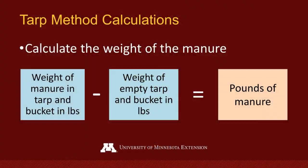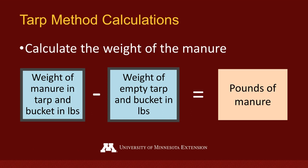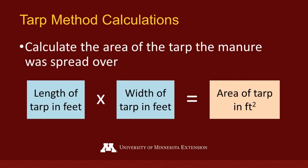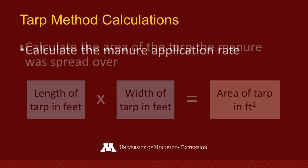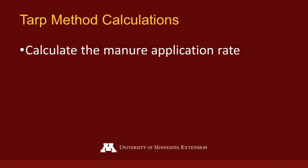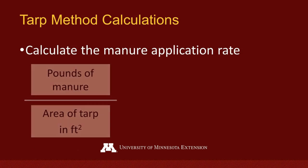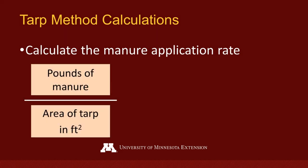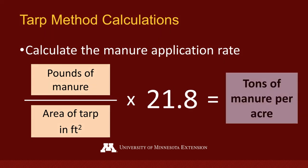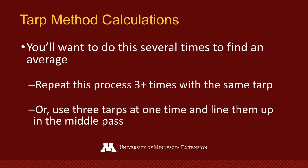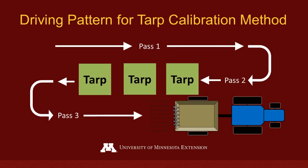Now we can begin to calculate the application rate. First, you will need to know the weight of the manure. Subtract the empty bucket weight from the bucket with manure weight. This will leave you with pounds of manure that was applied. Next, calculate the area of the tarp that the manure was spread over. Multiply the length of the tarp by the width of the tarp. This will give you the area in square feet. The remaining calculations are very similar to how we calculated the application rate with the load weight method. Divide the weight of the manure by the area of the tarp, then multiply by a conversion factor of 21.8. This will give you the tons of manure spread per acre. We recommend doing this procedure at least three times and then find the average, or use three tarps at once. Line them up in a row in the middle pass and find the average weight of manure on the three tarps.